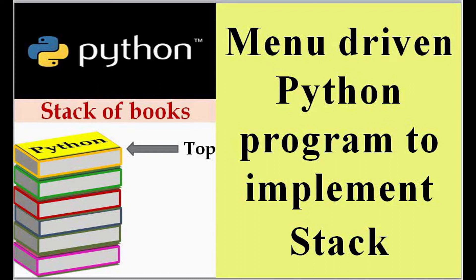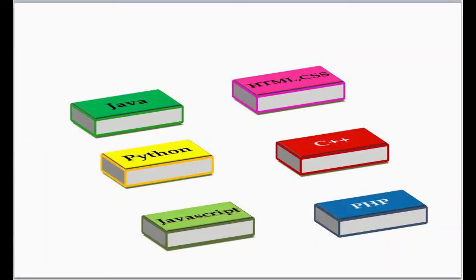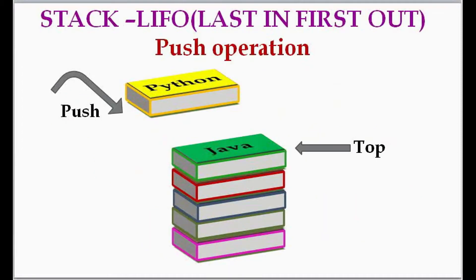In a stack, a new element will be added at one end called the top, and an element can be removed from that end only. We have six books scattered and we are going to arrange them in a stack. This is a stack of five books — Java is placed at the fifth position, so that position is referred to as top.